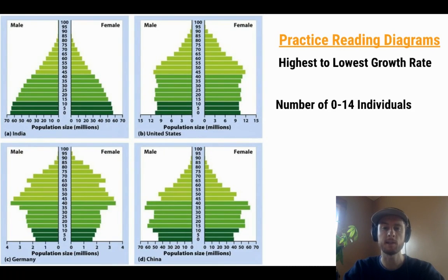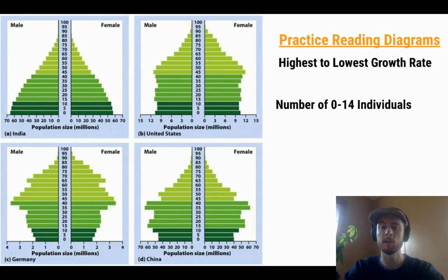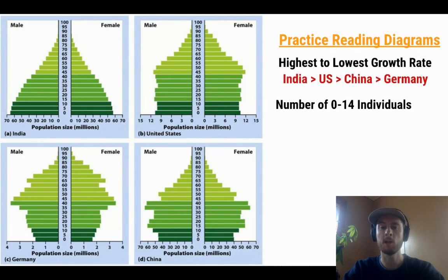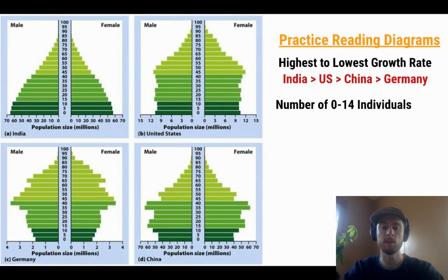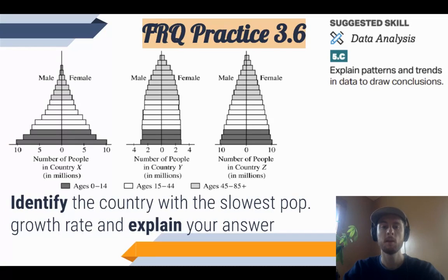Now let's get a little more practice reading an age structure diagram. Look at these four countries and try to rank them from highest to lowest growth rate. Remember to compare the pre-reproductive, or dark green, age cohort with the reproductive, medium green, cohort — don't just look at the shape. Then try something a little harder: count up the total number of pre-reproductive age individuals in each country, which is the number of males and females in the 0 to 14 age group — look at the dark green groups for each country. The suggested science skill for practice FRQ 3.6 is explaining patterns and trends in data to draw conclusions, so see if you can identify the country with the slowest population growth rate and explain your answer.